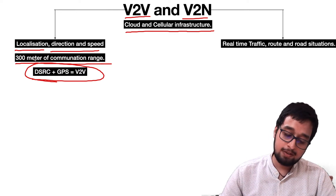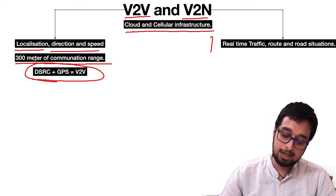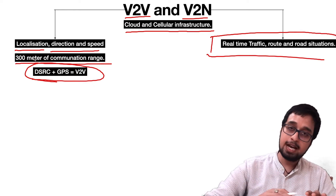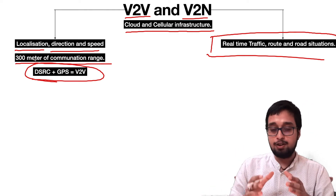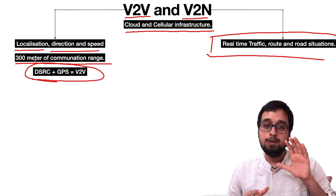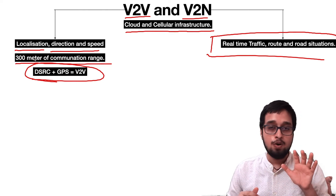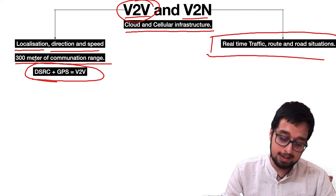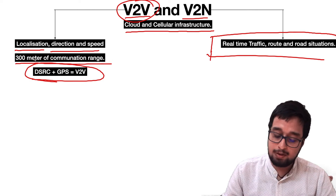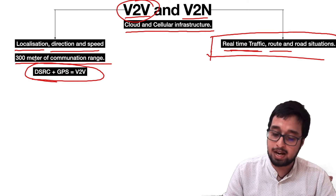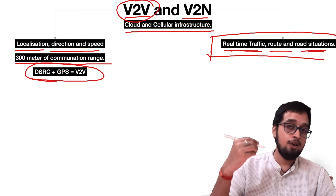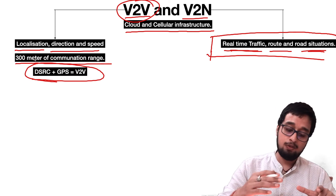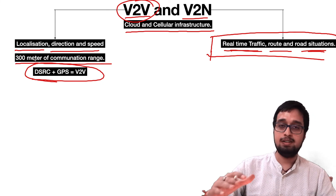V2n will basically let you know about real-time traffic situations, routes, and road conditions. V2v and V2n are slightly different, but both are available in your vehicle. V2v helps with localization, direction, and speed, and also communicates with other vehicles to get real-time traffic data, routes, and road situations ahead. That's why I wanted to clarify the difference between these two and what should be considered V2v versus V2n.